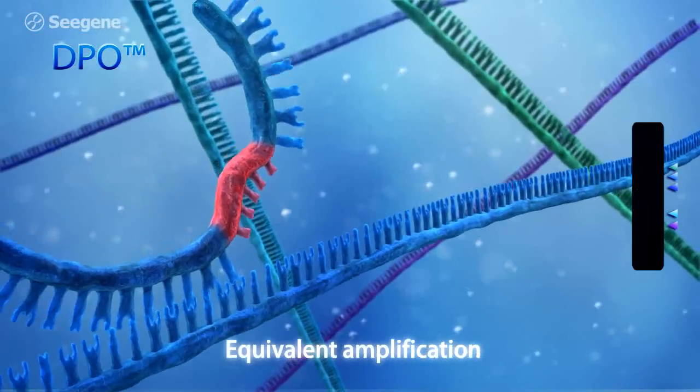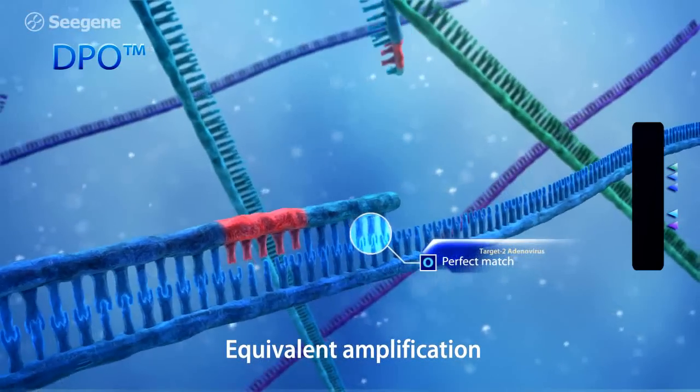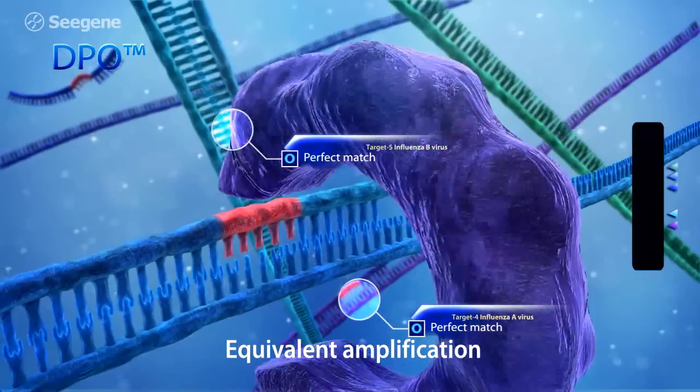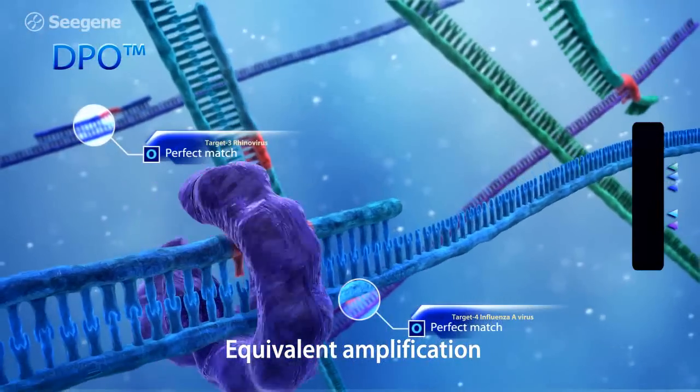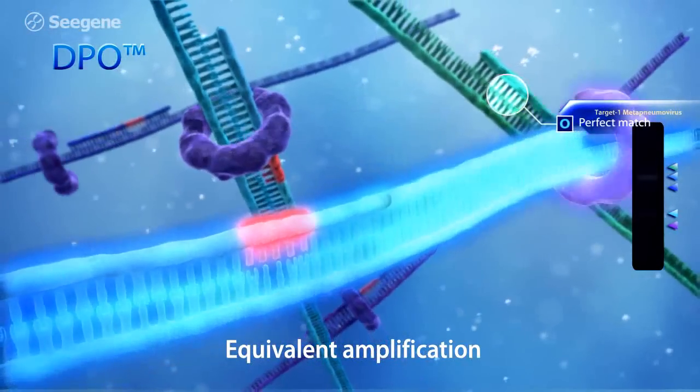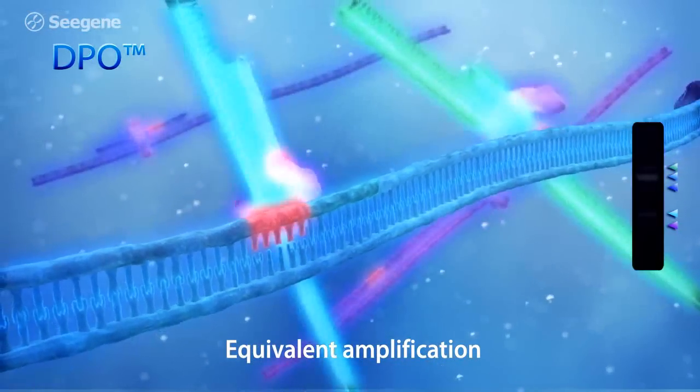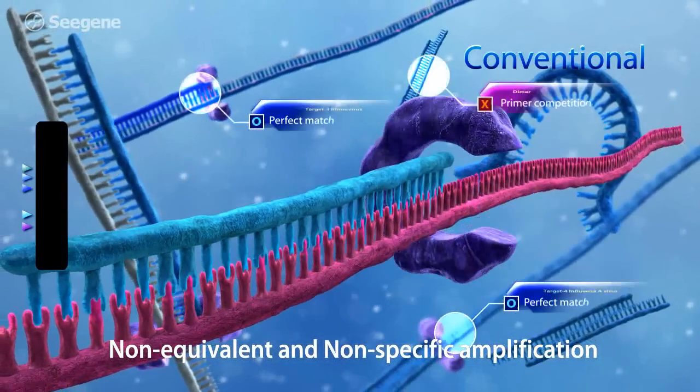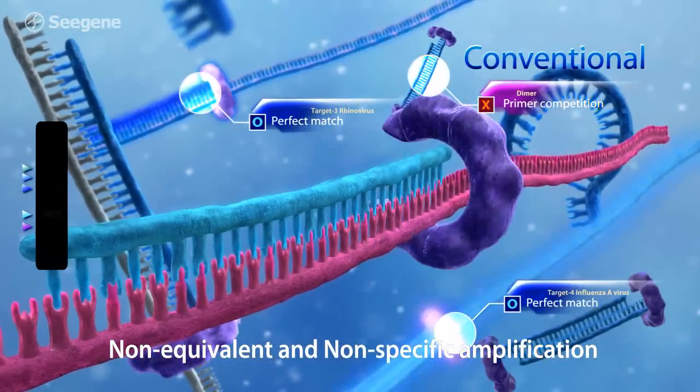The most critical factor in multiplex PCR is equivalent and simultaneous amplification of multiple targets. Equivalent amplification of multiple target sequences usually does not occur due to interference and primer competition.